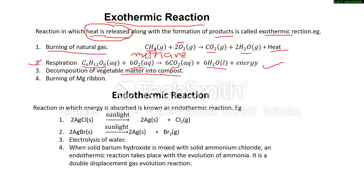Next examples include: decomposition of vegetable matter into compost, and burning of magnesium ribbon — which we have already discussed. When magnesium ribbon is burned, it burns with a dazzling white flame and energy is released. These are examples of exothermic reactions.